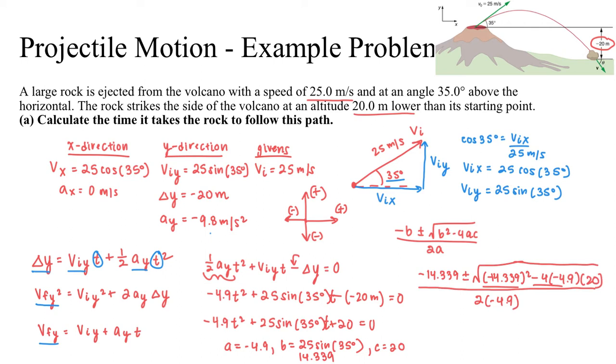Now, I'll put that into my calculator, and I will get two roots for the time. So time could be equal to negative 1 second or 3.96 seconds. And obviously, in this case, this negative 1 second is ridiculous, and we can disregard that root.